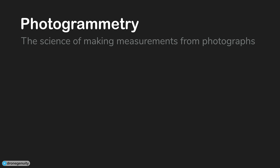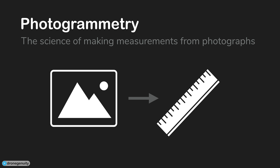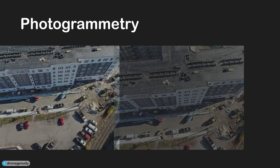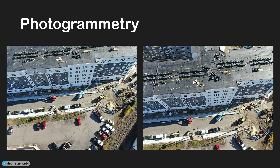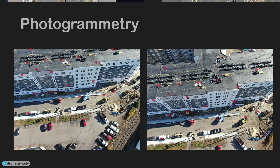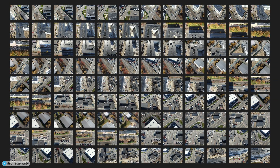Photogrammetry is the science of making measurements from photographs, particularly aerial photographs. The way photogrammetry works is it looks at photos of a subject taken from two or more locations. It uses the different perspectives of the images, along with the location data of where the images were taken, to triangulate the locations of points on the subject. The more photos you have of your subject taken from different locations, the more accurate this triangulation process will be.